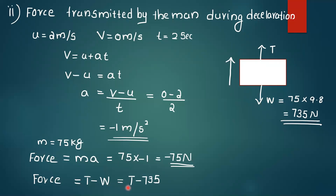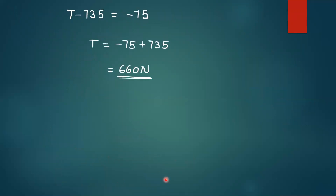From the equation: T minus W equals net force, that is T minus 735 equals minus 75. Therefore T will be equal to minus 75 plus 735, equal to 660 Newton.